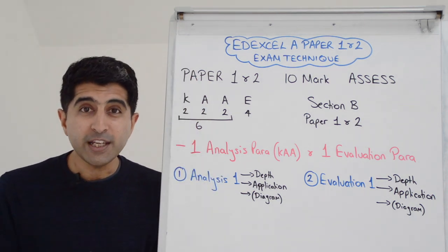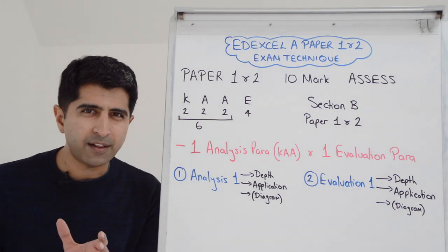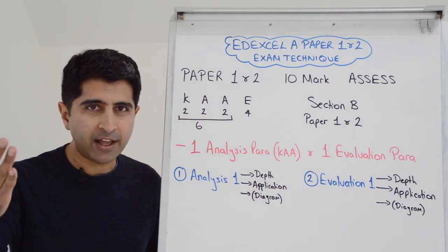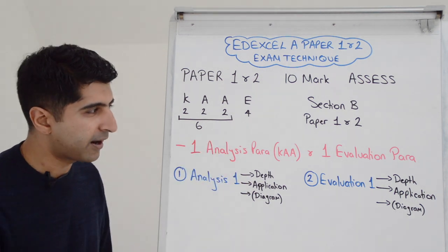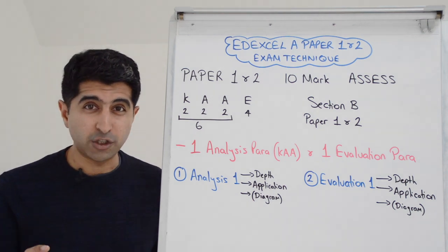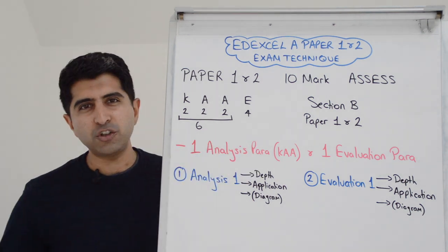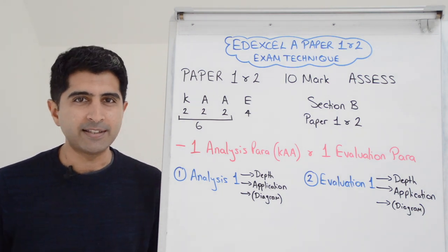When it comes to structure, all you need to do is write two paragraphs. You're looking for one detailed analysis paragraph or KAA, if that's how you like to consider it. One detailed KAA or analysis paragraph will be absolutely fine. And now one detailed evaluation paragraph. Remember that in section B, it's not the number of points that matter. It's the depth of your writing that matters.